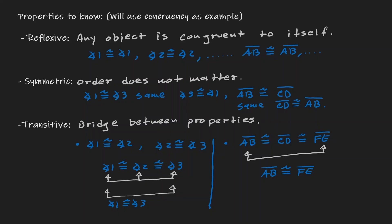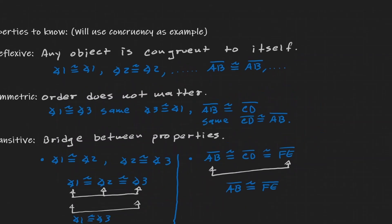Let's recap. The reflexive property: any angle or object is congruent to itself. Symmetric: the order doesn't really matter. And transitive: you can think about it as some kind of a bridge. It's very important that you understand these three properties — they're not just for congruency. I'm using congruency as an example, but we can apply these properties to any other properties we'll see in future lessons. With that said, let's take a look at some proofs for today.